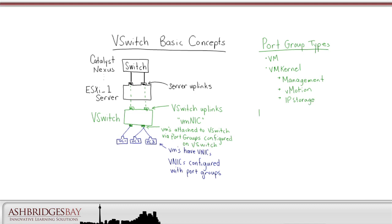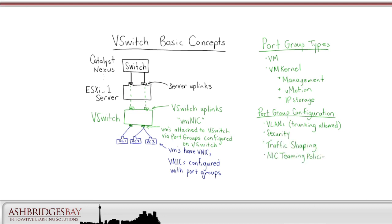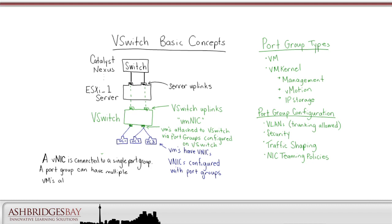Port groups have a small number of attributes. When you configure a port group, you can specify a VLAN or configure the port group for trunking. You can also configure security, traffic shaping, and NIC teaming policies. For UC on UCS, we are mostly concerned with the VLAN and NIC teaming policies. Two fundamental things to remember: a vNIC is connected to a single port group, and a port group can have multiple VMs attached to it.